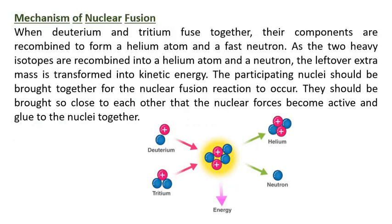Mechanism of nuclear fusion: When deuterium and tritium fuse together, their components are recombined to form a helium atom and a fast neutron. The leftover extra mass is transformed into kinetic energy. The participating nuclei must be brought so close to each other that the nuclear forces become active and glue the nuclei together.